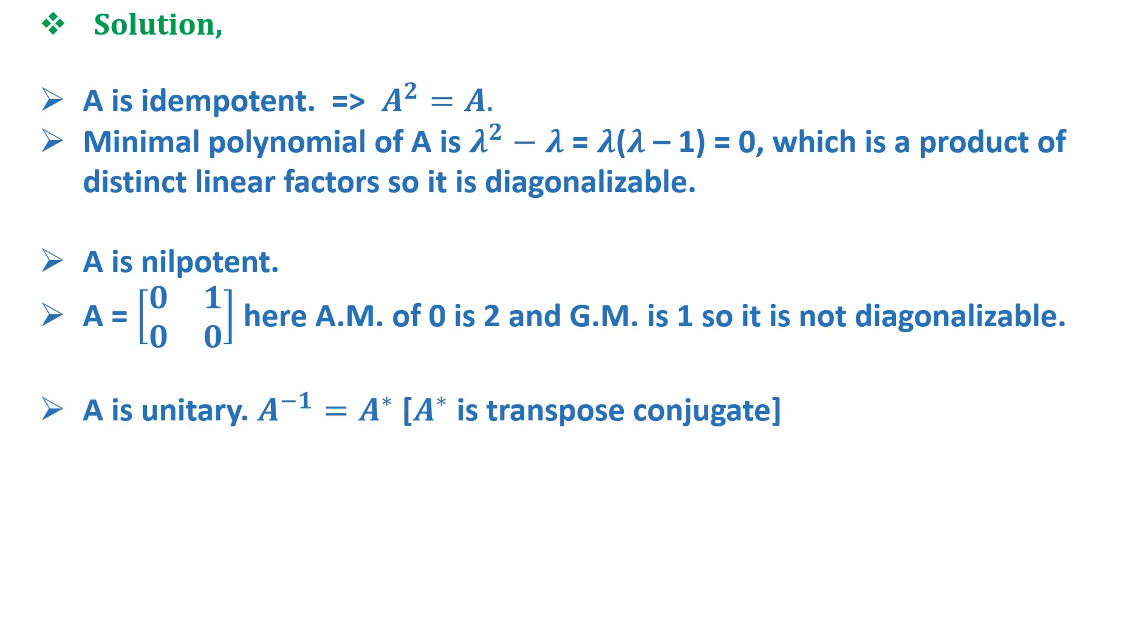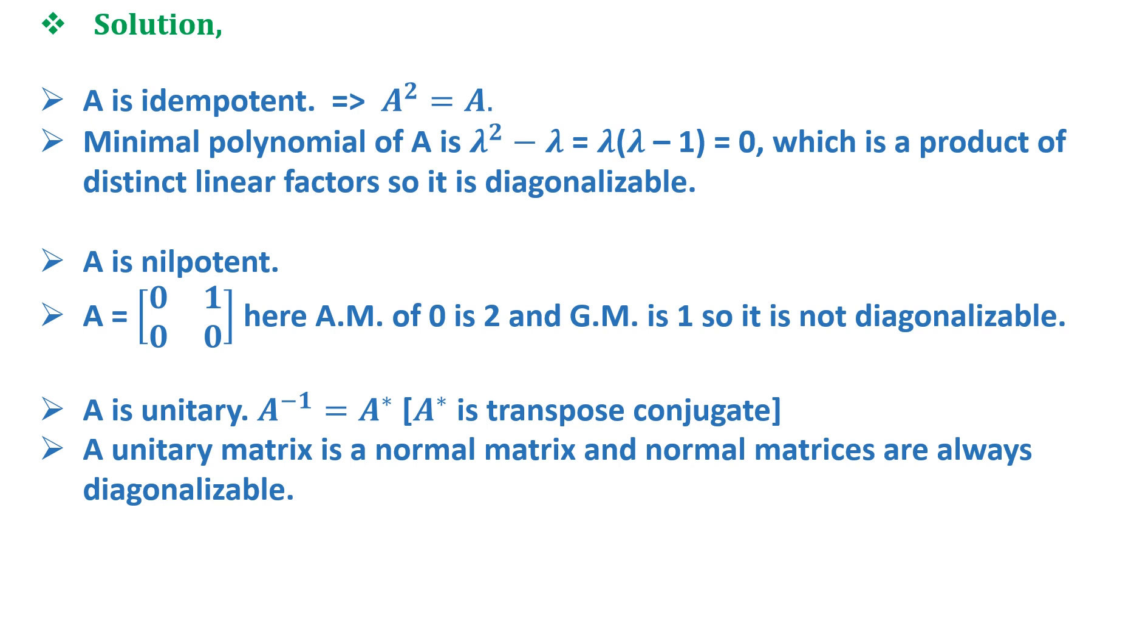And option C says that A is unitary, that is A⁻¹ = A* (A transpose conjugate). And it is well known that a unitary matrix is a normal matrix and normal matrices are always diagonalizable. Therefore the correct answers are option A and option C.